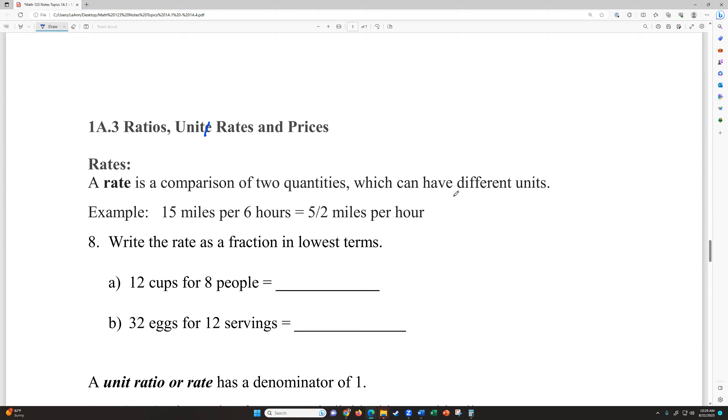So like 15 miles per six hours. So we would reduce that, it's 15 over six reduced down as five halves, but we can't just put miles or just hours. We have to use both units with the word per to represent which one was the A and which one was the B, which one was on top, which one was on bottom. So five halves miles per hour.